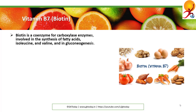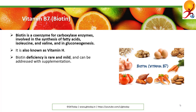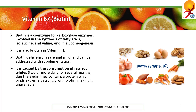Vitamin B7, or biotin, is a coenzyme for carboxylase enzymes involved in the synthesis of fatty acids, isoleucine, and valine, and in gluconeogenesis. It is also known as vitamin H. Biotin deficiency is rare and mild and can be addressed with supplementation. This deficiency can be caused by the consumption of raw egg whites for several months, due to the avidin they contain — a protein that binds extremely strongly with biotin, making it unavailable. This deficiency can cause hair loss and skin problems.